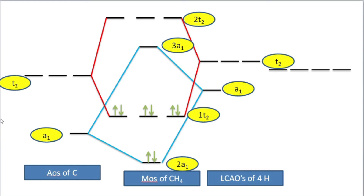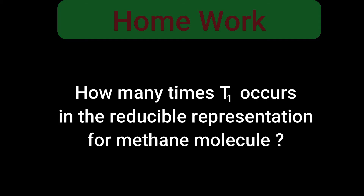This illustrates how LCAO and group theory are applied to describe molecular orbitals. We have discussed sigma bonding in water, ammonia, and methane molecules. In a tetrahedral molecule, five irreducible representations are possible: A1, A2, E, T1, and T2. As homework, determine how many times the T1 irreducible representation occurs in the reducible representation obtained by the bond vector method.